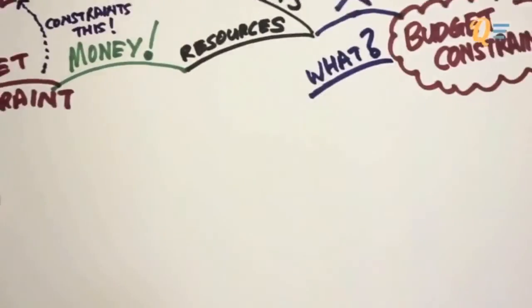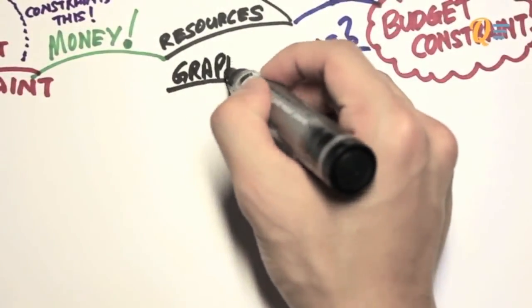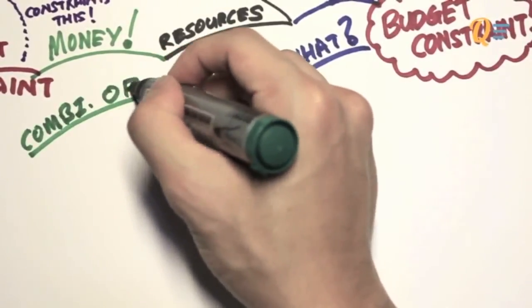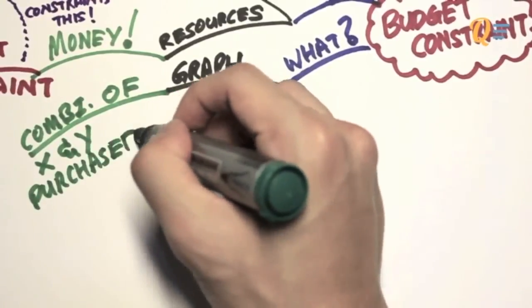What is the budget constraint? You are going to find this very familiar, especially from the last chapter. The budget constraint is actually a graph that represents the various combinations of X and Y an individual can purchase.